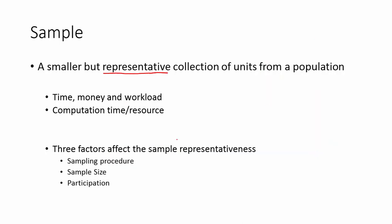Why do we do sampling? There are many factors involved — whether it's money, time, or workload — we always want to optimize on those things. Collecting data for the entire population often involves a lot of money and time, which is difficult in many situations. Computational time and resources is also a challenge, though less so nowadays. What matters in sampling are the procedures, the sample size, and the participation of different elements, especially in surveys.